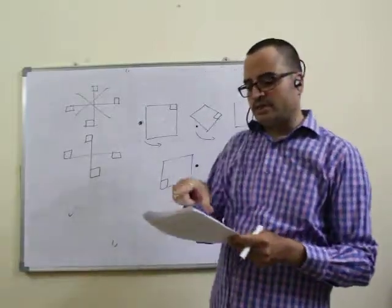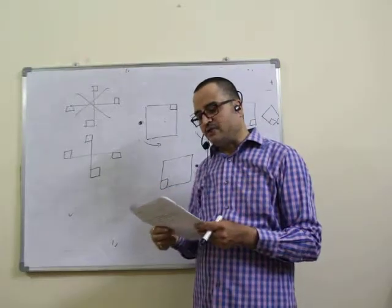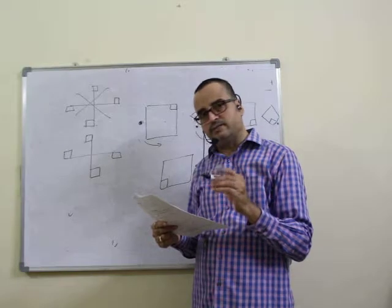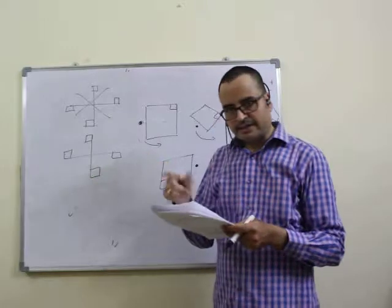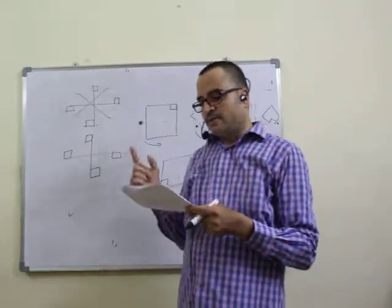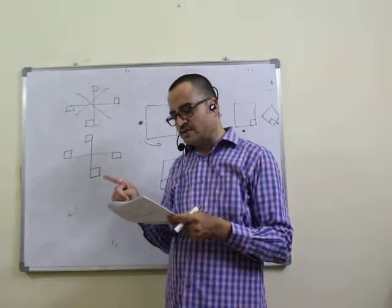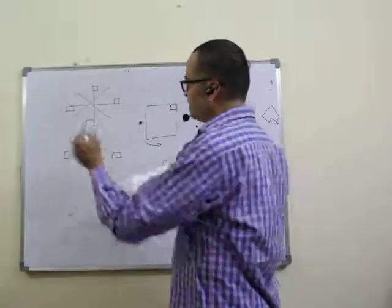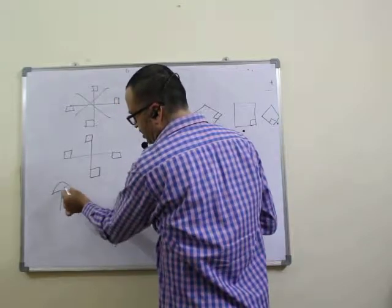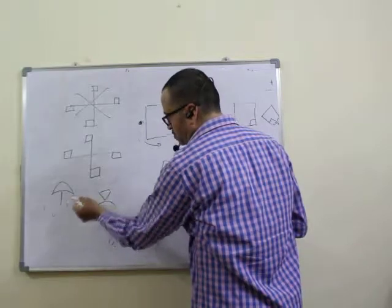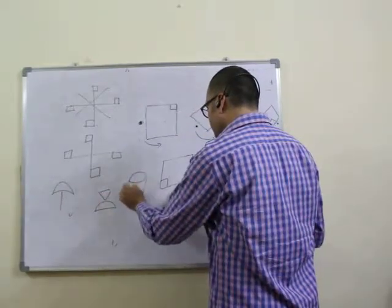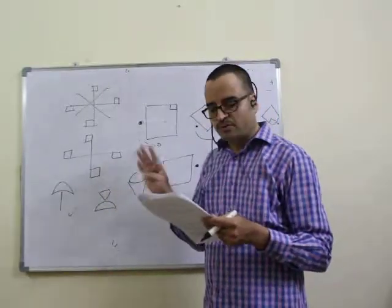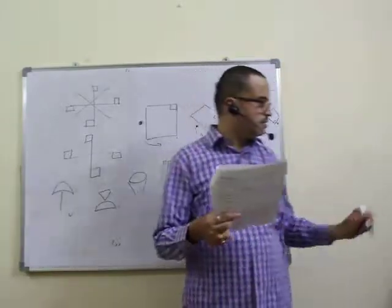Question twenty-three is a figure classification. Nine figures are given. Based on lines: figures 3, 4, 8 form one group — triangle, pentagon, rectangle. Based on curves: figures 2, 5, 9 form another group — circles. Figures 1, 6, 7 form the third group — two-component structures like semicircle combos and chair-like shapes. So twenty-third question answer is third option.